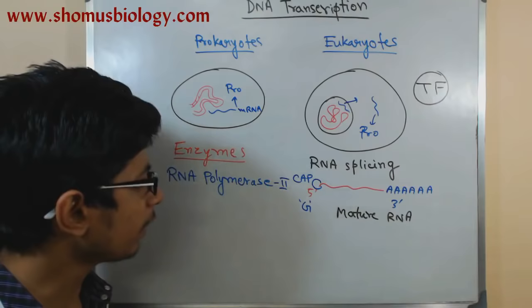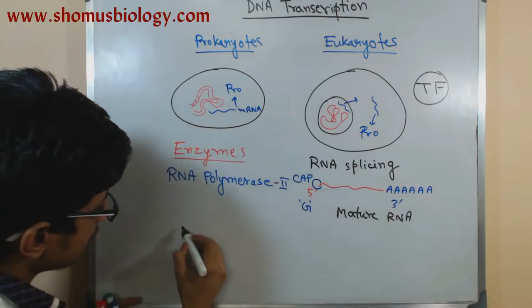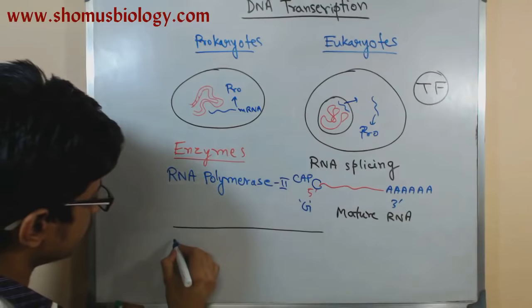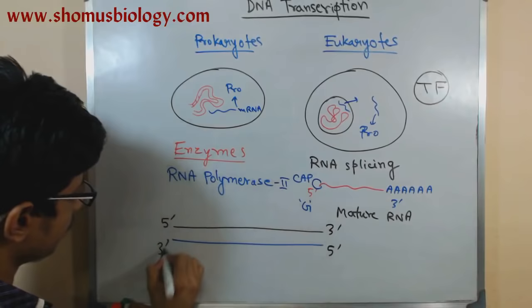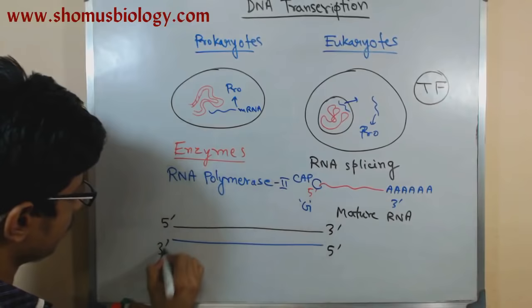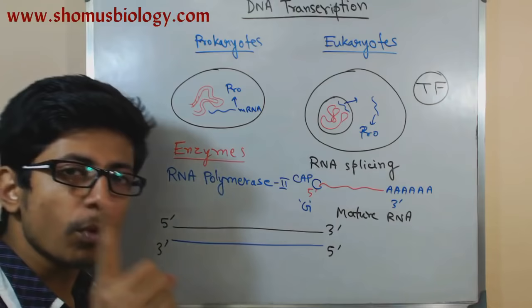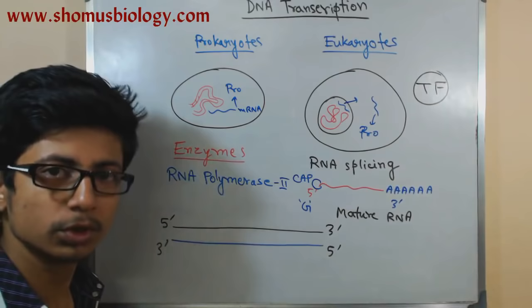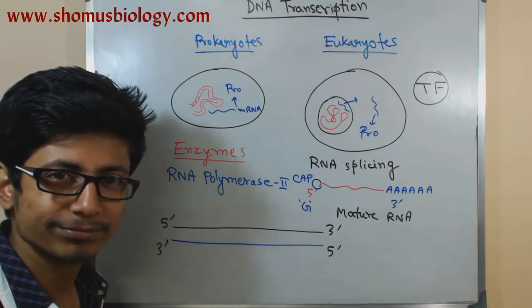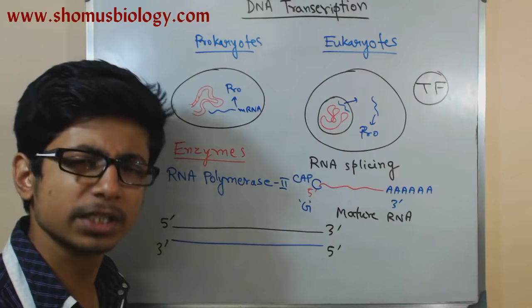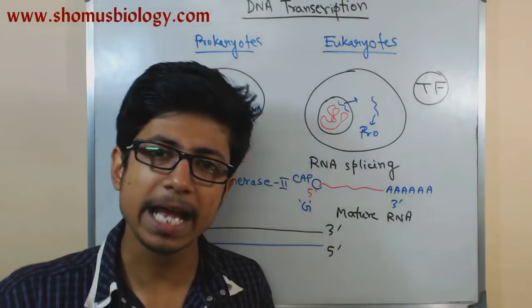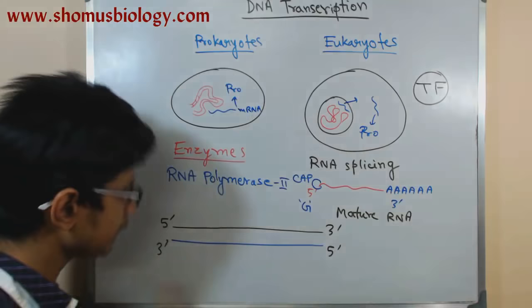A very important concept — and one where many students make mistakes — concerns the two strands of DNA. Since we only need to produce one strand of RNA, which DNA strand is chosen as the template? Let's draw both strands: one strand goes five-prime to three-prime and the complementary strand runs antiparallel. The answer to which strand is used as template lies in the directionality of this process.